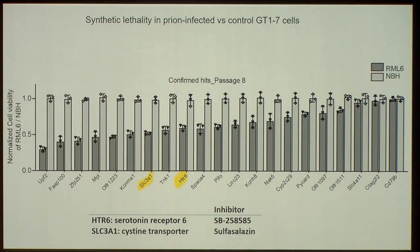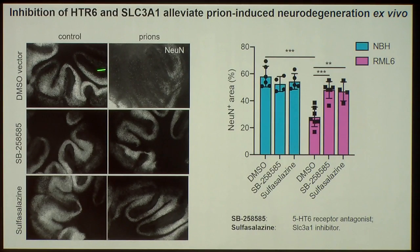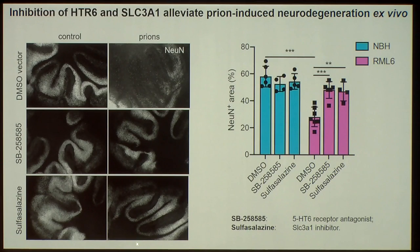We validated this in cerebellar organotypic slices. Control slices versus prion-infected slices: you see that with a vector, the beautiful arbor vitae of the cerebellum and granule cell layer is completely destroyed. However, if you give sulfasalazine — an inhibitor for the system transporter — or an inhibitor for 5-HT6, you very largely suppress the toxicity. This looks promising. This type of dropout screen is very well suited to finding transducers of toxicity.